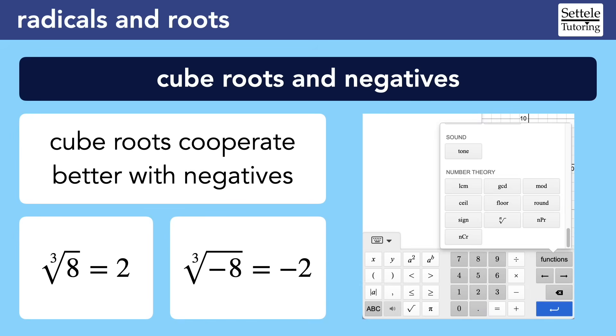To create a cube root or anything greater than a square root in Desmos, follow these steps. First, click the keyboard button on the bottom left. Then hit the functions button on the right. Then scroll all the way down to the n root button near the bottom of the list.